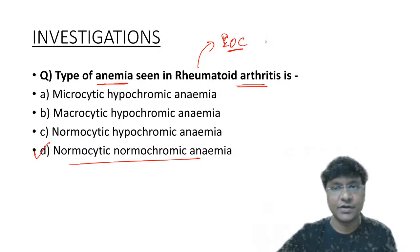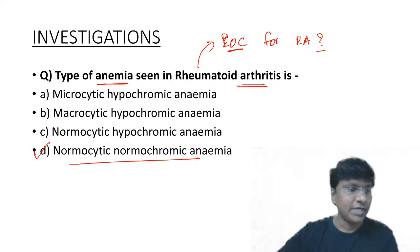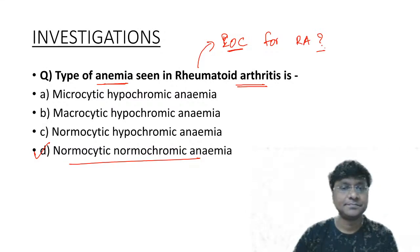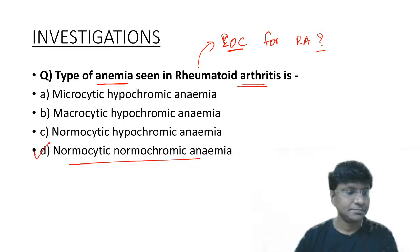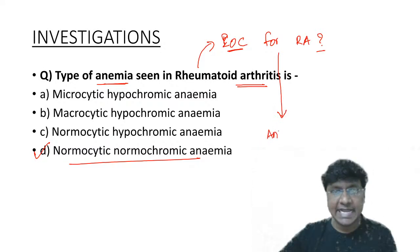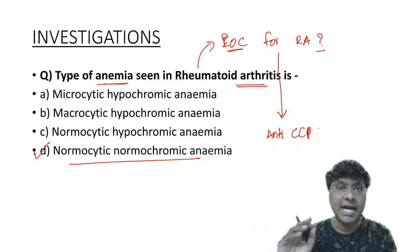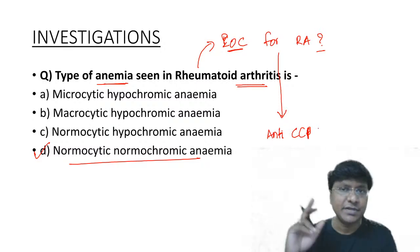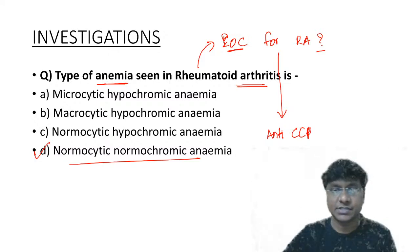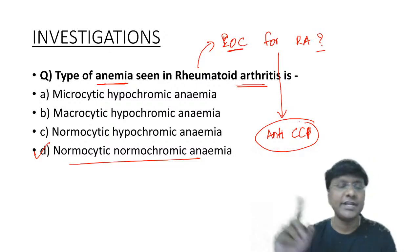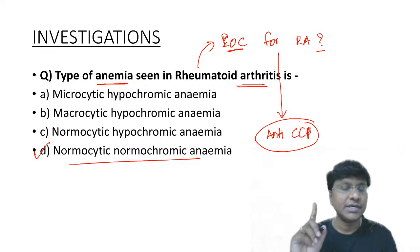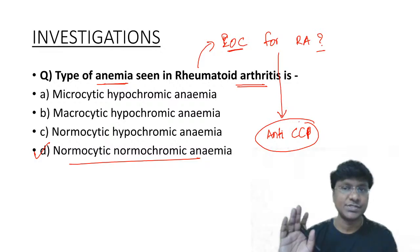What is the investigation of choice for rheumatoid arthritis? The answer is anti-CCP — anti-cyclic citrullinated polypeptide — not the RA factor. RA factor is not specific for rheumatoid arthritis; it is positive in many conditions. That is why RA factor is not the investigation of choice. Anti-CCP is the specific and preferred investigation.